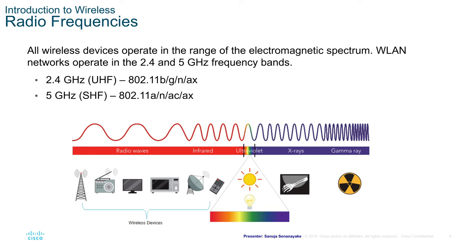All wireless devices operate in the range of the electromagnetic spectrum. WLAN networks operate in 2.4 and 5 GHz bands. The 2.4 GHz band is a UHF band associated with 802.11b, g, n, and ax. The 5 GHz band is an SHF band associated with 802.11a, n, ac, and ax standards.